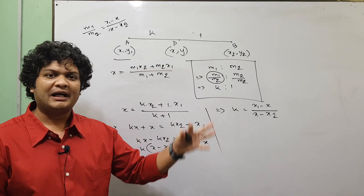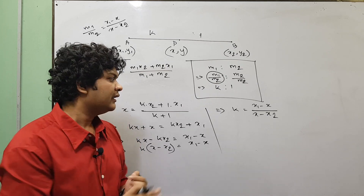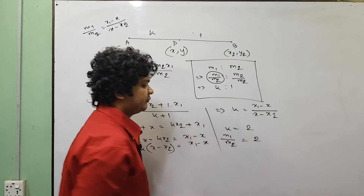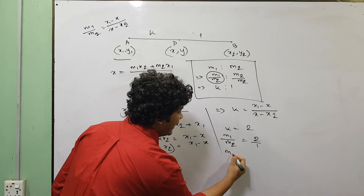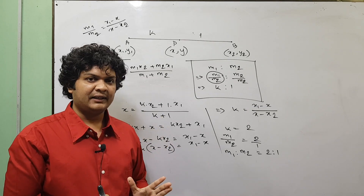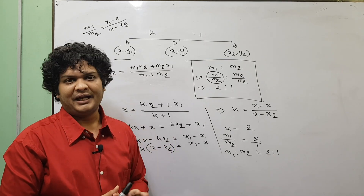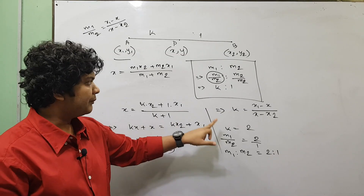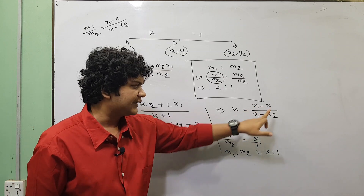Ultimately, the same thing is that k is equal to m1 by m2. So k is equal to x1 minus x divided by x minus x2. For this example, k is 2, 1, 1. The formula to get the answer is: k is equal to x1 minus x divided by x minus x2.